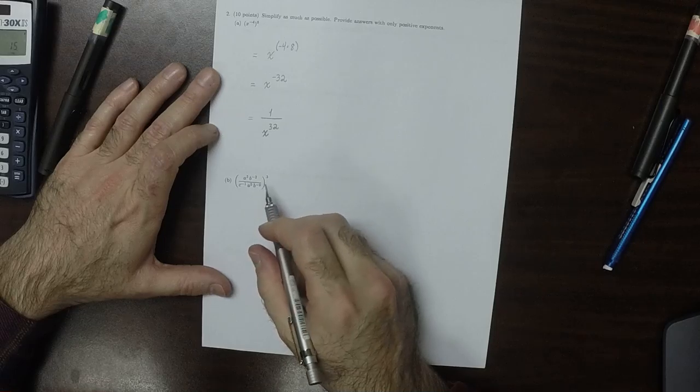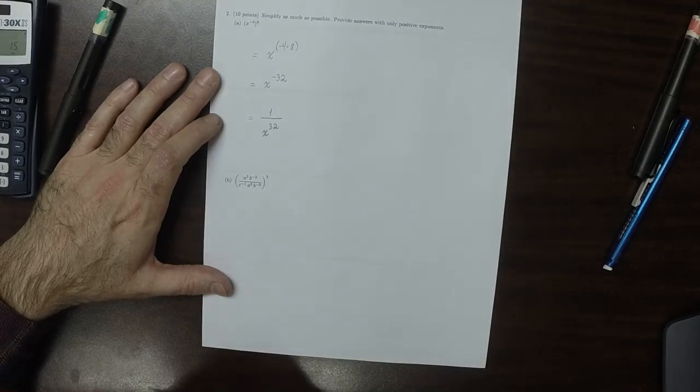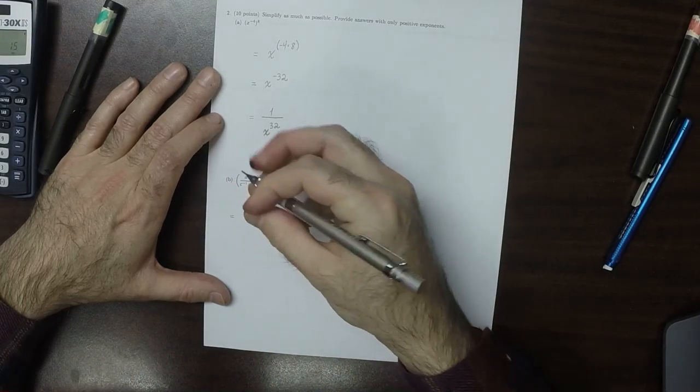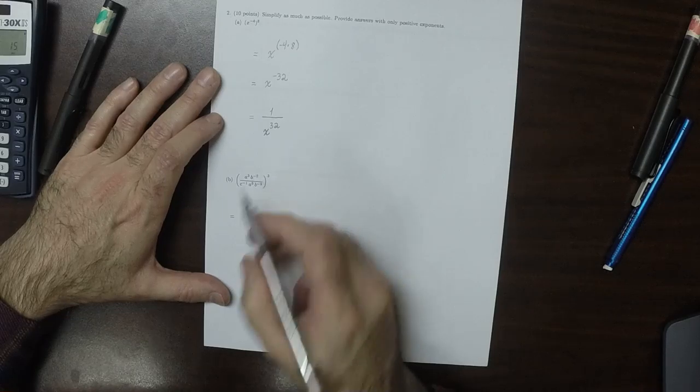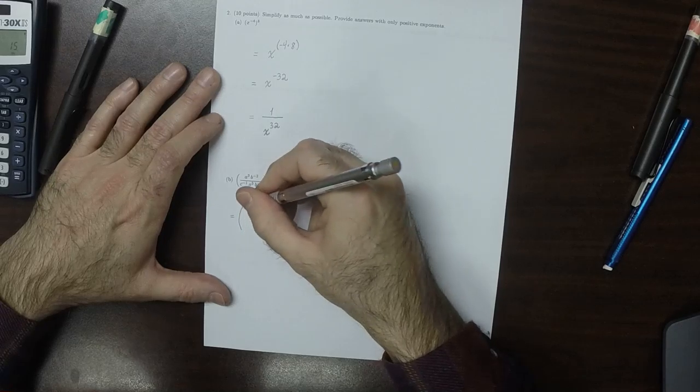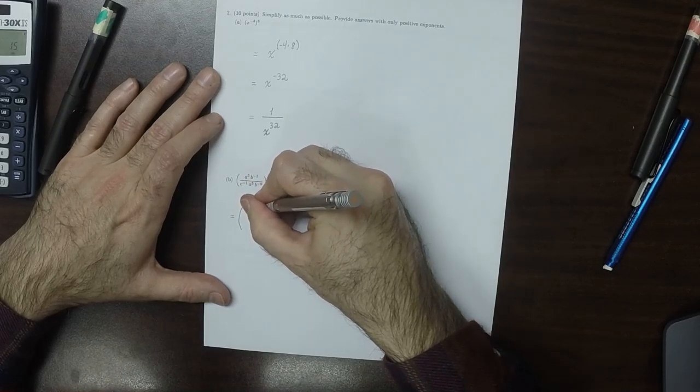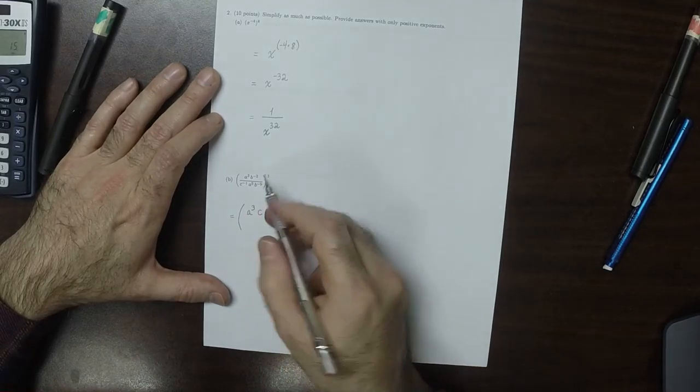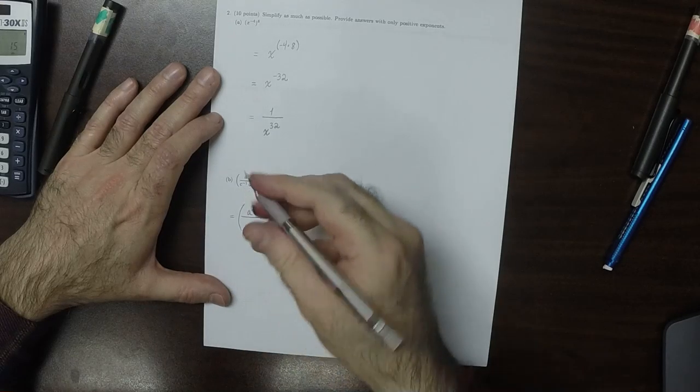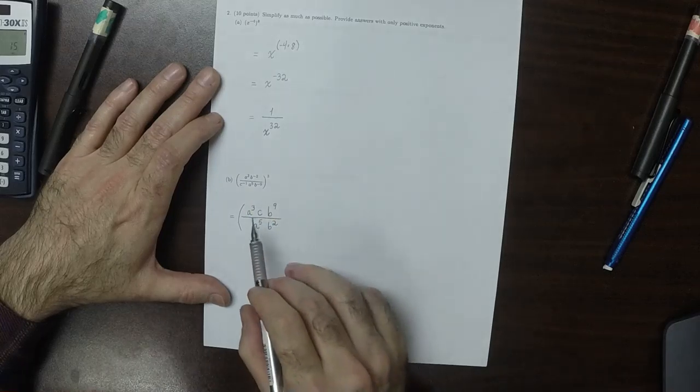For part B now, best strategy is to simplify the thing inside of the round parentheses and deal with this cubing later. So the first thing I'm going to do is move all these factors around until they have positive exponent. When you move something from numerator to denominator, or denominator to numerator, that negates its exponent. So this will be a cubed. I'll move these b's down, I'll move this c up. So a cubed c, and I'll move these b's up, so this will be b to 9. And then divide by these b's that are going to move down, so b squared. And those a's are still down here.